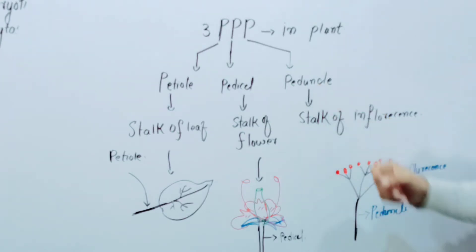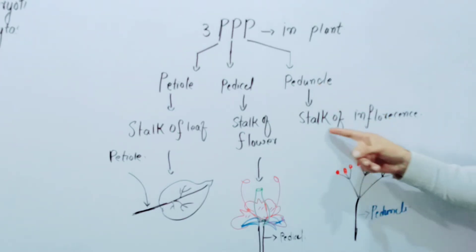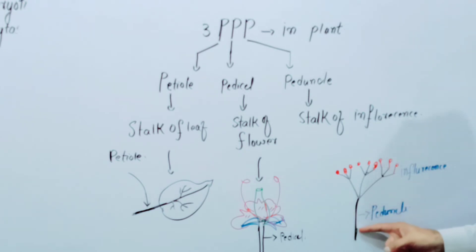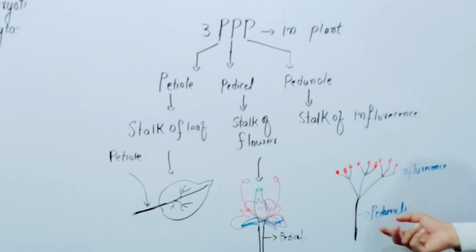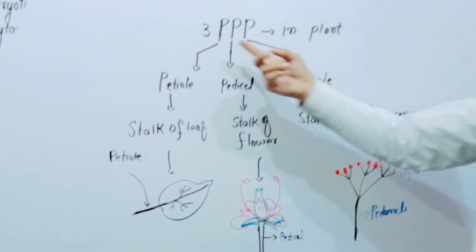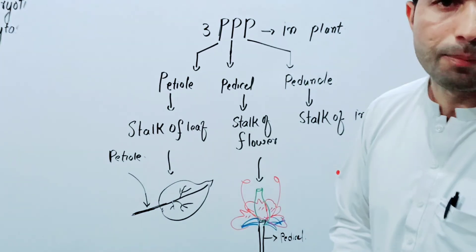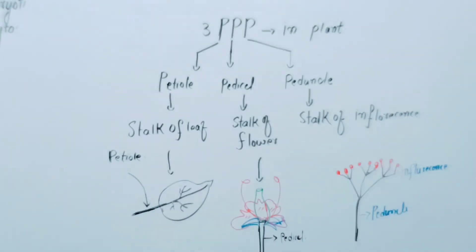Peduncle is the stalk of an inflorescence. This is the inflorescence, and this is its stalk — so this is called peduncle. So let's remember these 3 PPP in plants.